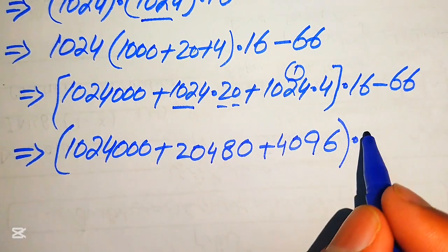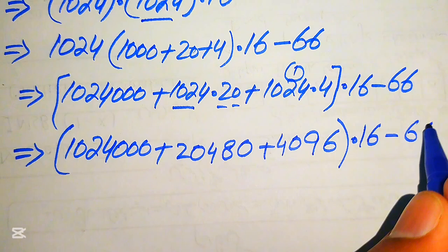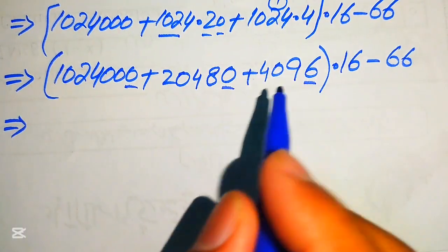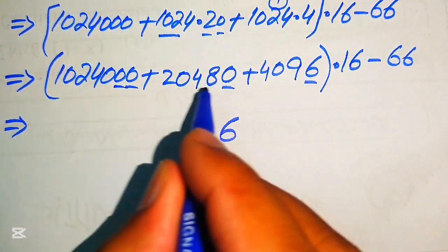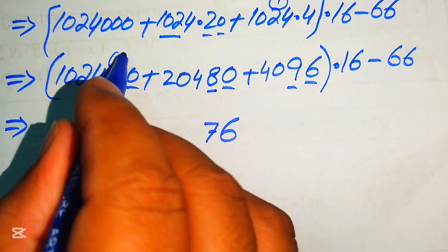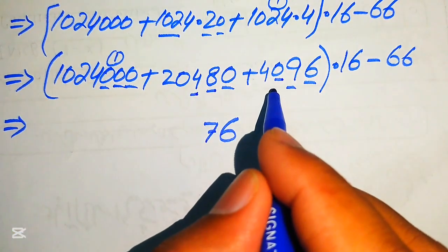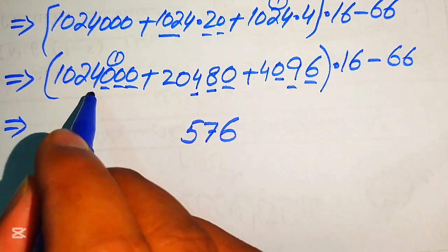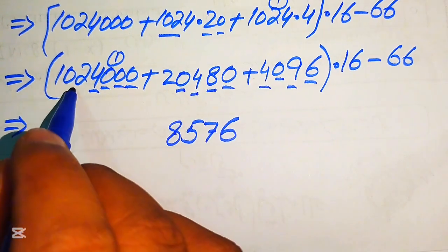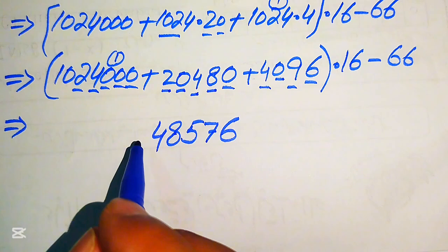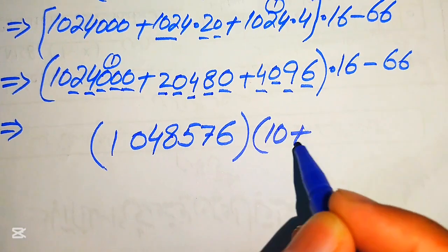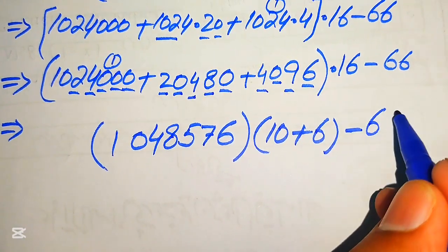We sum all these values: 0 plus 0 plus 6 is 6; 0 plus 8 is 8; 8 plus 9 is 17, write 7 carry 1; 0 plus 4 is 4, 4 plus 0 is 4, 4 plus 1 is 5; 4 plus 0 is 4, 4 plus 4 is 8; 2 plus 2 is 4; giving 1,048,576. We then write 16 as 10 plus 6 and multiply this sum by 16, subtracting 66 at the end.